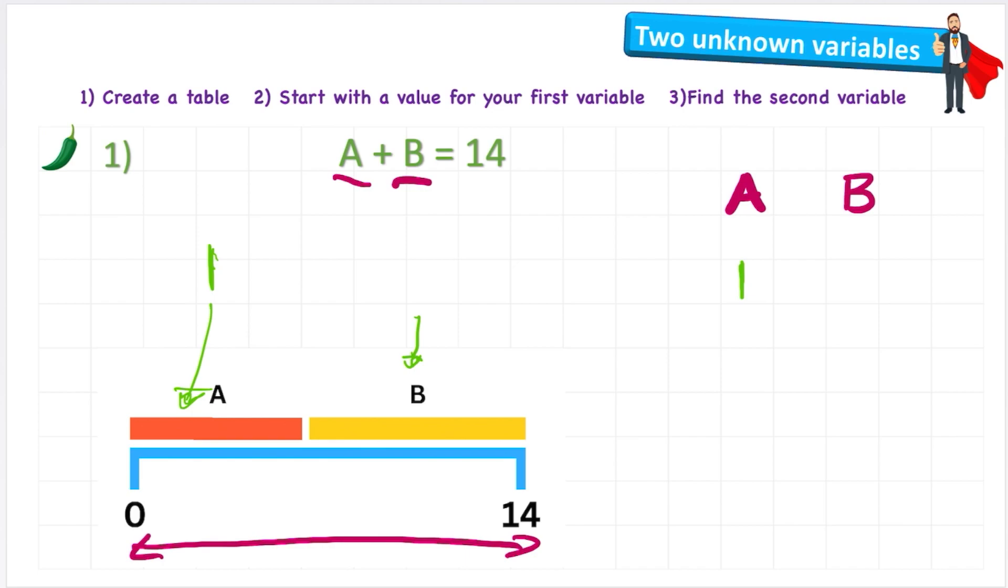So therefore to find out what B is, B will be the difference between 14 and 1. So therefore we can show that by using inverse. So if I put 14 - A = B and then replace A with the value 1, 14 - 1 = 13. So in my table, if A was 1, B would have to be 13.